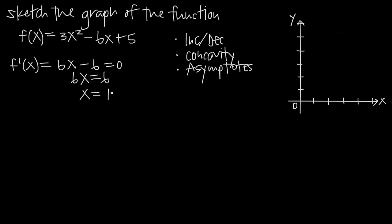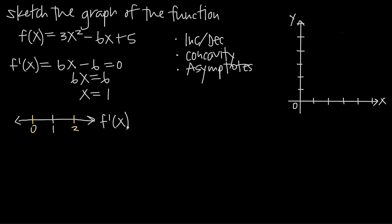We need to test this critical point to see if the function changes direction at x = 1. To check that it's increasing on one side and decreasing on the other, we use the first derivative test. We draw a number line and place our potential critical point x = 1 in the middle. We test values on either side — 0 to the left of 1 and 2 to the right — by plugging them into the first derivative f'(x).